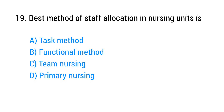Question number 19. Best method of staff allocation in nursing units is? The right answer is option D: Primary nursing.